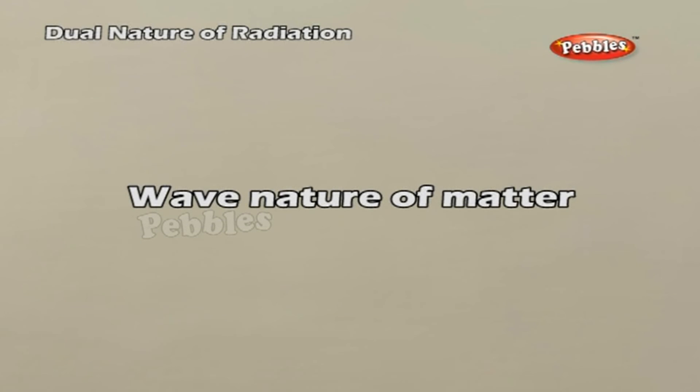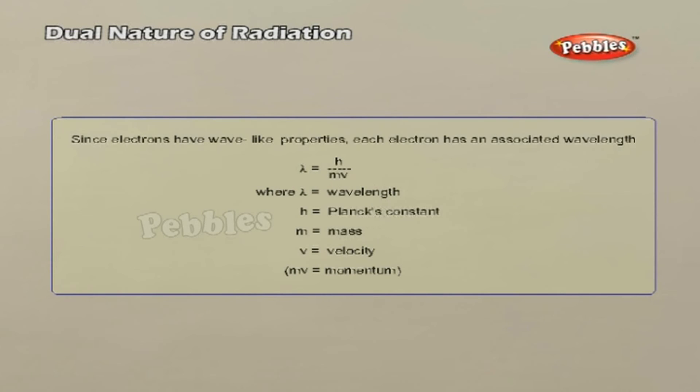Wave nature of matter. Wave nature of matter states light has wave-like and particle-like properties. According to de Broglie's hypothesis, matter has wave-like properties in addition to the expected particle-like properties, and the same is confirmed by electron diffraction experiments. De Broglie proposed that electrons moving around the nucleus have wave-like properties.